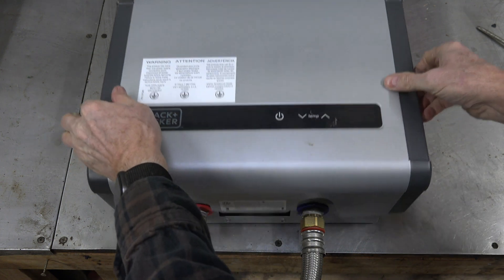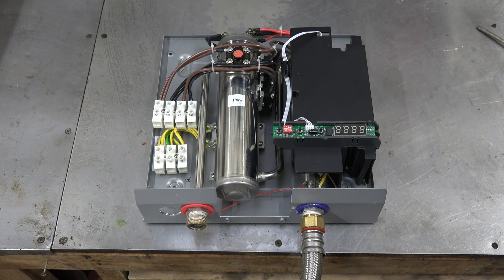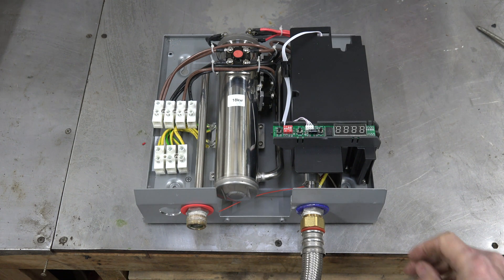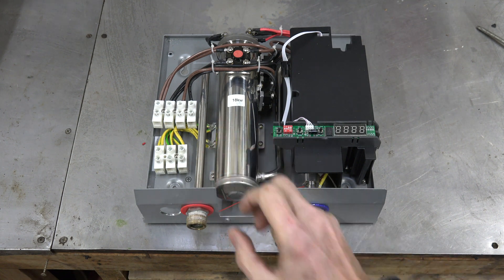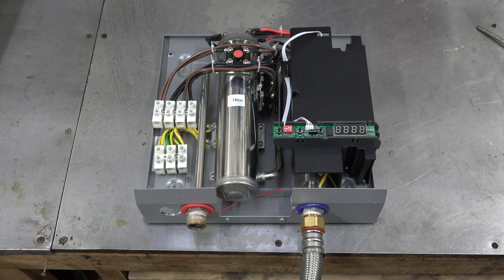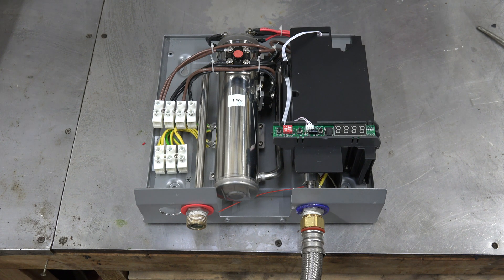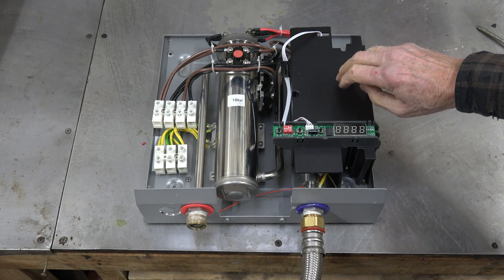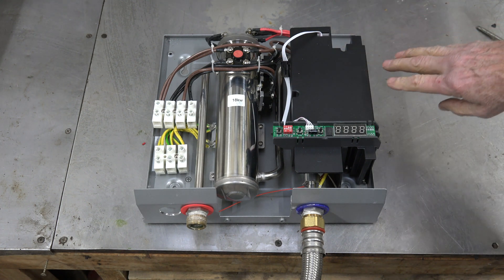Taking the top off, we've got our little tank here. There's three elements in it, each element is 6 kilowatts, so it's a total of 18 kilowatts. This is the electronics. I'll take the cover off so you can take a look at it.